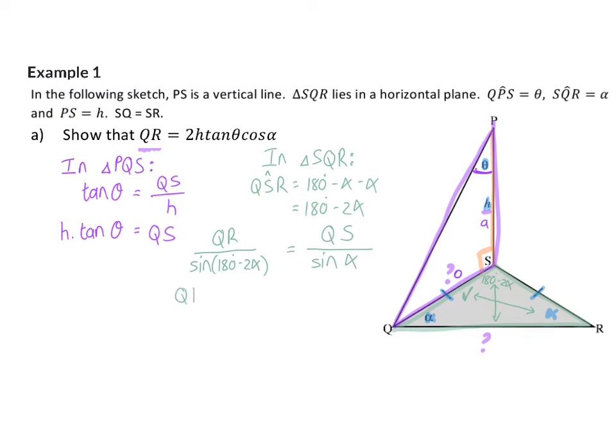So, to solve QR, we are going to multiply with sin of 180 minus 2 alpha on the right. In my next step, I'm going to substitute QS with the value that we calculated for QS, H times tan theta.